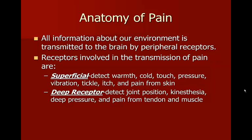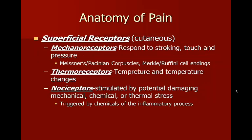Deep receptors are located inside the body; they detect joint position, help in the movement of your body, and detect deep pressure and pain from tendon and muscle. Superficial receptors are also called cutaneous, since they are located mostly in the skin. Mechanoreceptors respond to stroking, touch, and pressure — these are Meissner's corpuscles, Merkel, or Ruffini cell endings. Thermoreceptors detect temperature and temperature changes. Nociceptors are stimulated by potentially damaging mechanical, chemical, or thermal stresses and are triggered by chemicals of the inflammatory process — these are receptors specifically for pain.